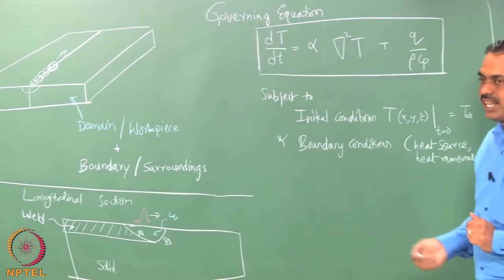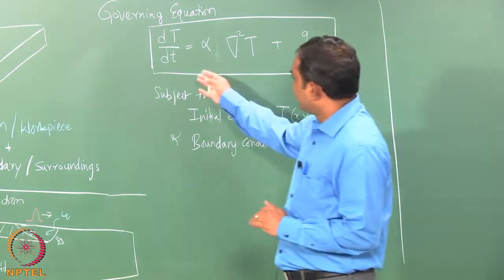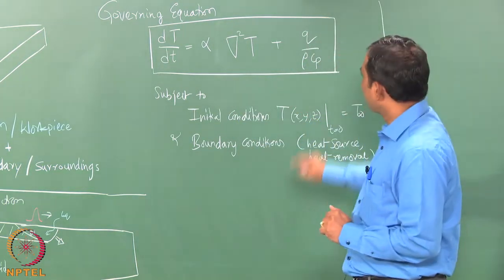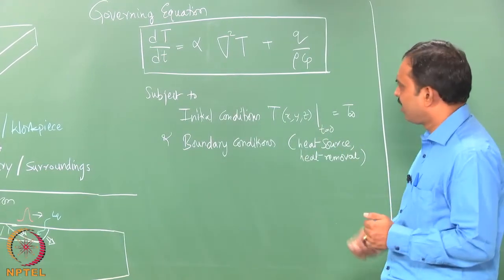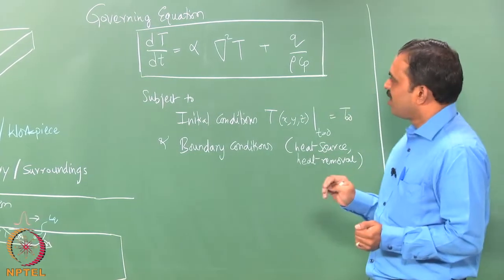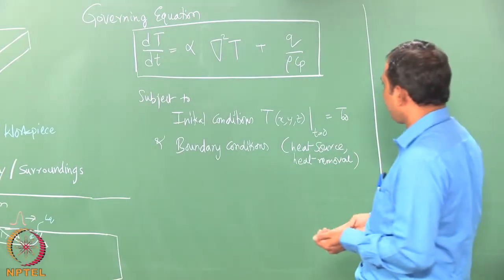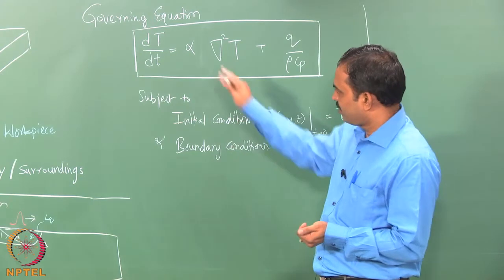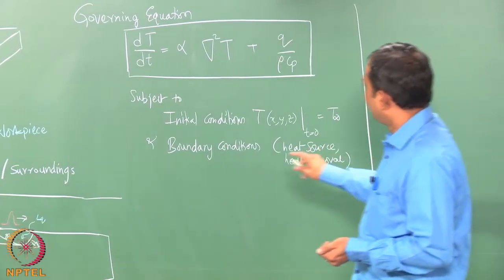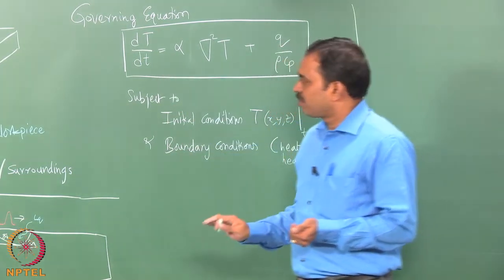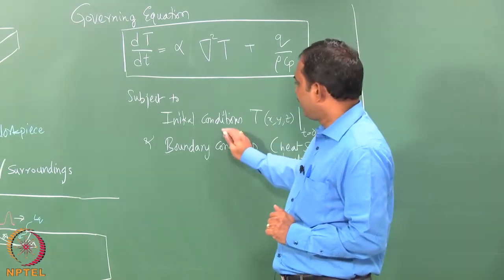Here is the governing equation derived using a simple enthalpy balance method. Alpha is the thermal diffusivity. Q is the heat generation in the volume of the workpiece — for example when current passes through it — otherwise it can be taken as zero in solids with no reactions. Rho and Cp are properties of the solid phase: rho is density and Cp is heat capacity. The problem of thermal modeling is posed as solving this governing equation subject to initial and boundary conditions.